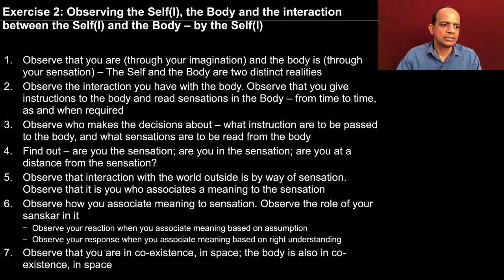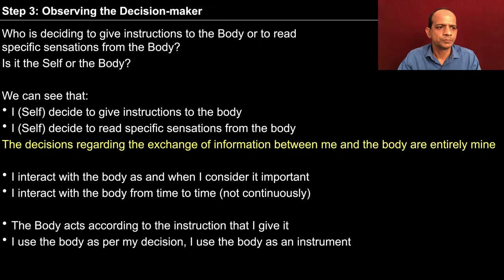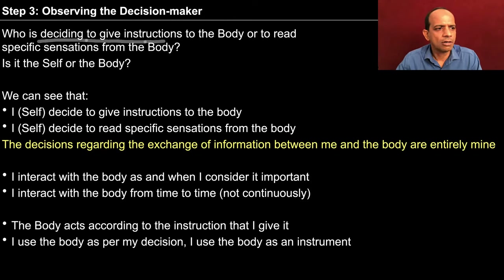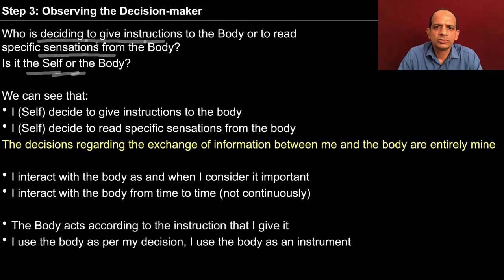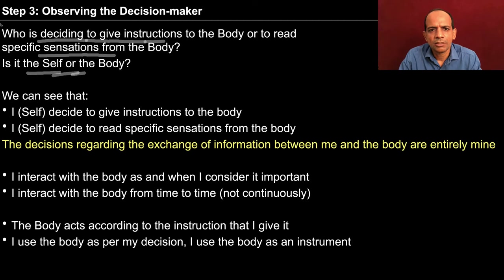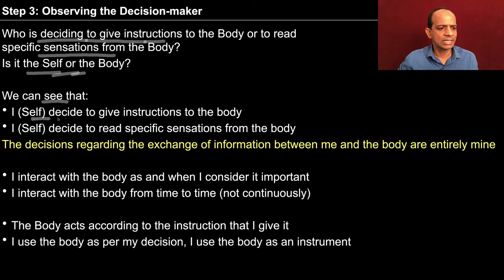There are seven steps to be accomplished in exercise 2. In step 3 we are trying to observe the decision maker — who is deciding to give instruction to the body or to read specific sensations from the body. Is it the self or the body? Having observed that I give instructions to the body and receive sensations from the body, I need to make out who is deciding this. When you observe, you can see that it is the self that decides to give instruction to and read specific sensations from the body.